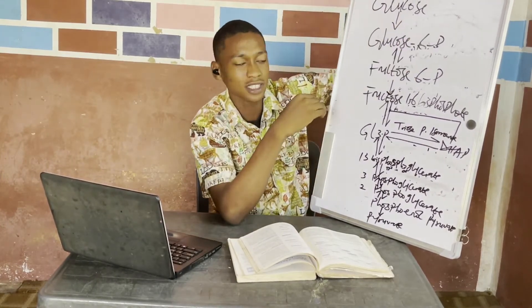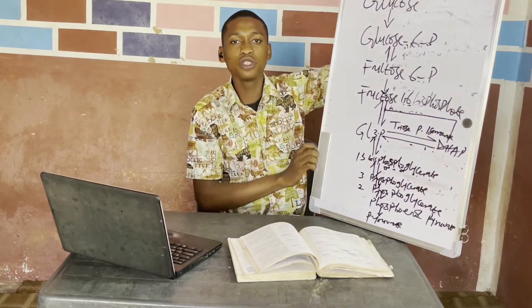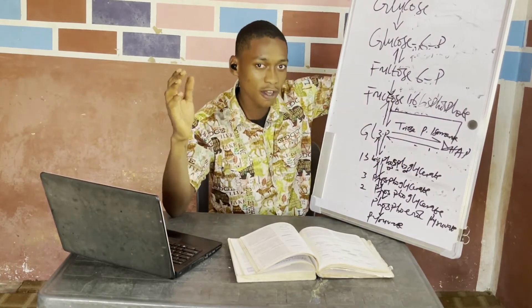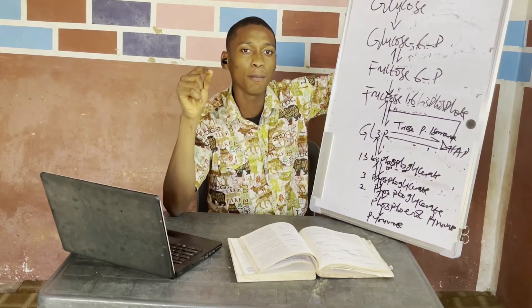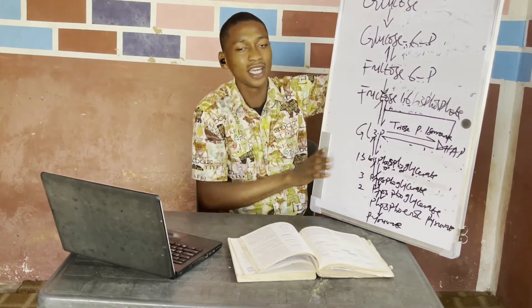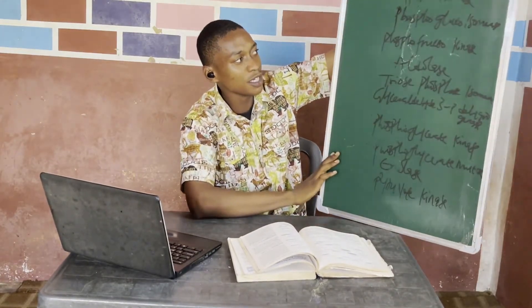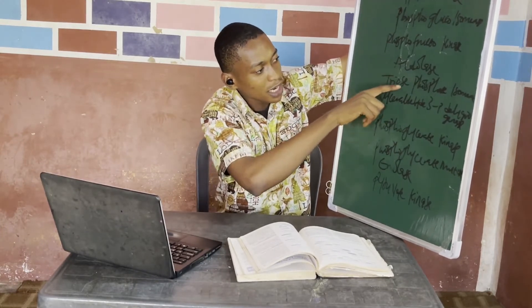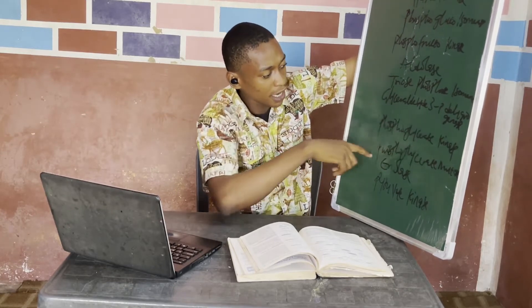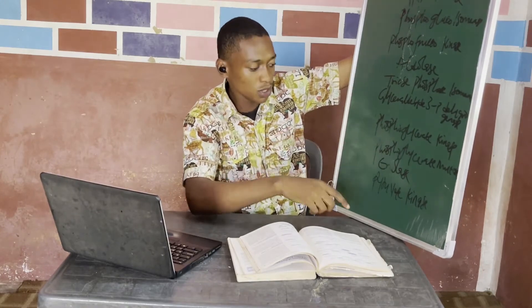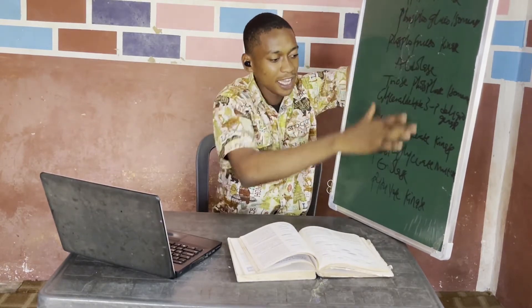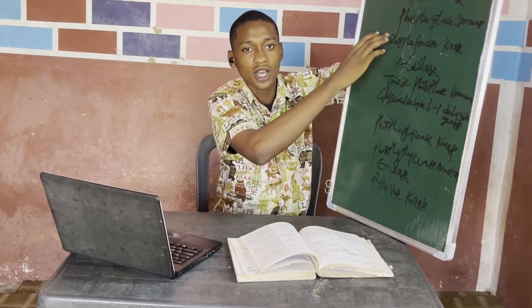There are 11 molecules and 10 steps, and there are 10 corresponding enzymes: hexokinase, phosphoglucoisomerase, phosphofructokinase, aldolase, triose phosphate isomerase, glyceraldehyde-3-phosphate dehydrogenase, phosphoglycerate kinase, phosphoglycerate mutase, enolase, and pyruvate kinase. Each enzyme represents one of the 10 steps.